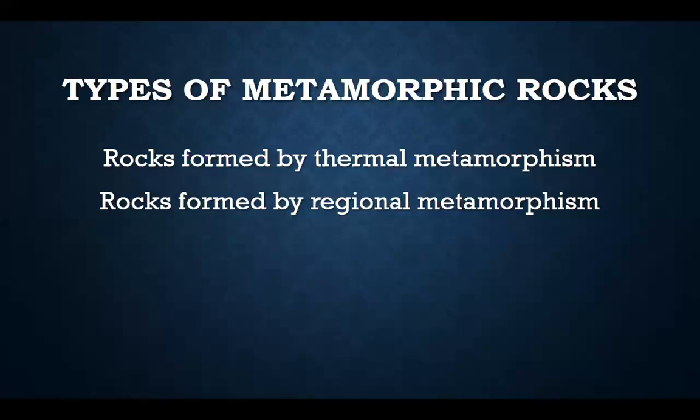On the basis of these reasons, there are two types of metamorphic rocks: number one, rocks formed by thermal metamorphism, and second, rocks formed by regional metamorphism. The change caused by heat — inside the surface of the earth — produces one type of metamorphic rock. The other type is due to pressure. So basically the two types are: one due to heat, and the other due to pressure. Let's discuss the first type.